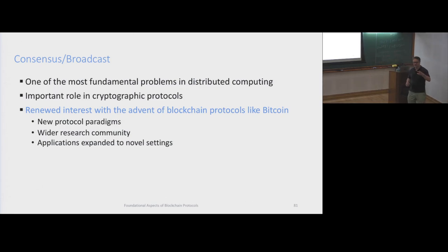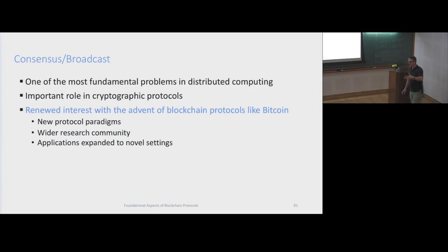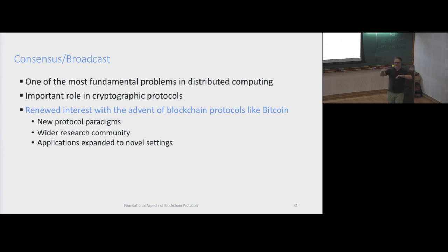There are two versions: the consensus variant and the broadcast variant, where there's one single sender - we call that broadcast. Most cryptographic protocols would assume that there's a broadcast channel, which is implemented on a point-to-point connection infrastructure, where parties just connect to each other and want to realize this broadcast functionality. We call that broadcast channel.